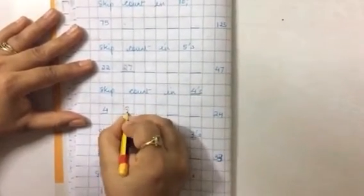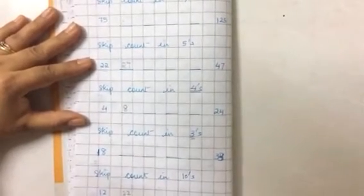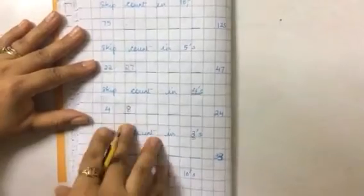Skip count in fours. Four hai. Toh four ke baad next four numbers hum skip karenghe. Tuh kya aayega? Very good. Eight. Eight ke baad phir four numbers humnye skip karenghe. Woha abhi aapko khud karna padeega. Yaha peh karo.